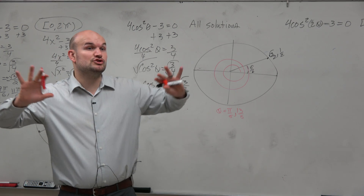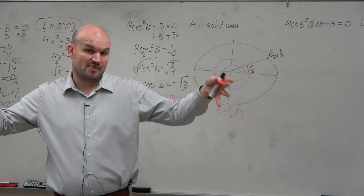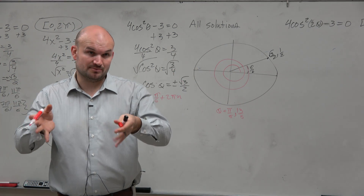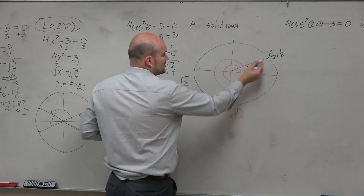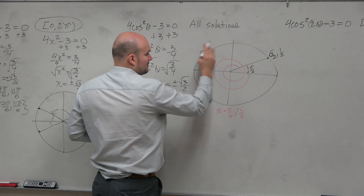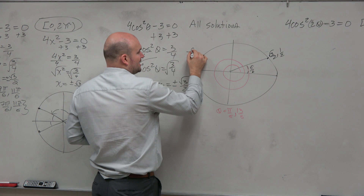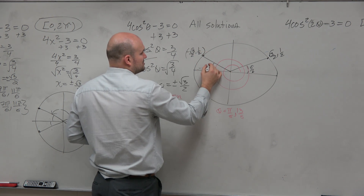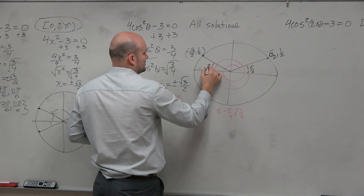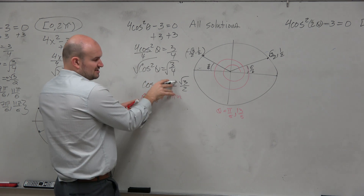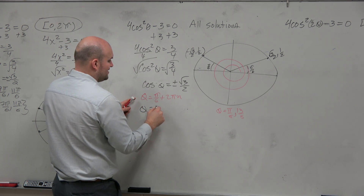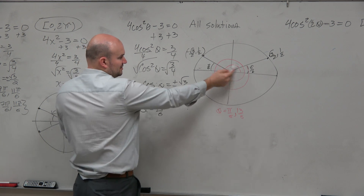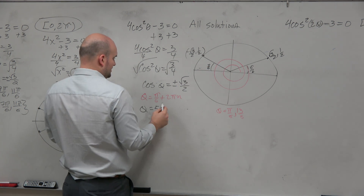I'm going to show you the general idea of this and then show you how we simplify this. The same thing can be done over here. So if I take this point and reflect it, I know this point is negative square root of 3 over 2, one half. It has the same reference angle, which is π/6, because it's plus or minus. So we could say theta equals 5π/6 — that's the angle, it's π/6 short of π.